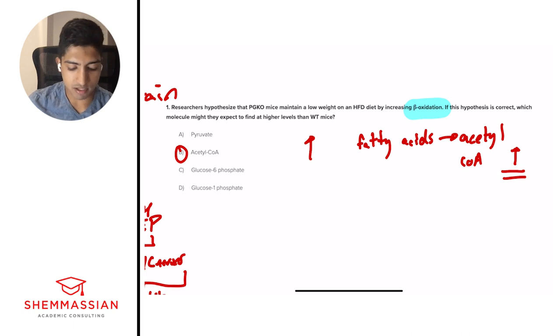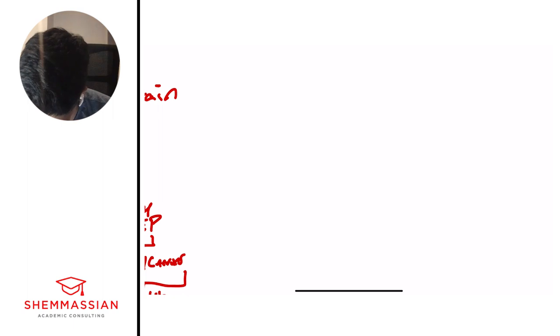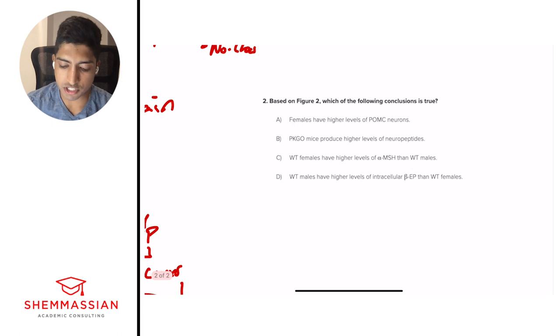This is the main takeaway of understanding the big picture idea of what beta oxidation starts with and ends with. And then we can go from there. So with that, that's the understanding of that question. And we can go on to question number two.